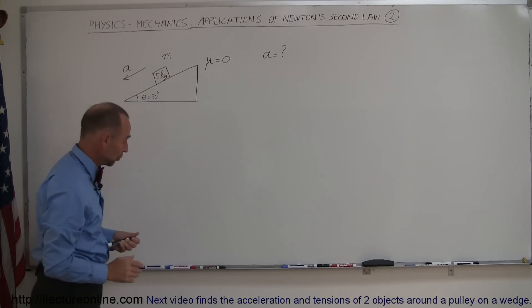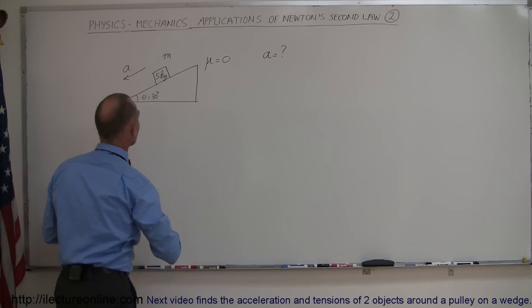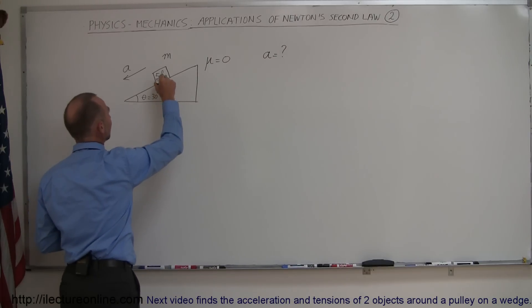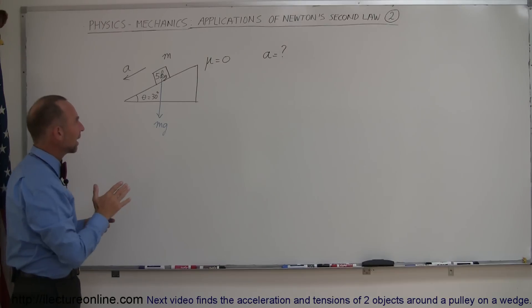So again, we want to indicate all the forces acting on that mass. We have the gravity acting downward. So we have mg, which is the weight of that object. Now, since it's on an incline, we really should draw the components of that vector.